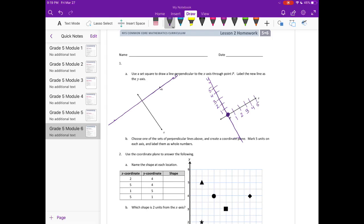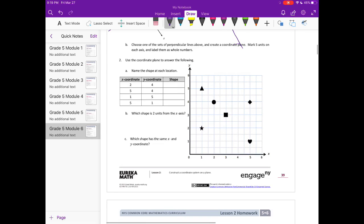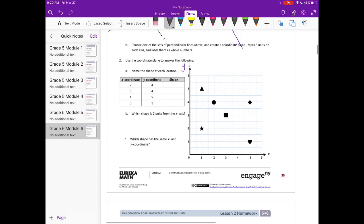And we've created a coordinate plane. Number two: use the coordinate plane to answer the following. Now letter A, name the shape at each location. So x coordinate 2 and y coordinate 4. I always remember the x and y coordinates because y, when I draw y, this is long. So if it's ever not labeled, maybe that silly trick will help you. But I always remember that the vertical is y because y kind of has a vertical line in it.